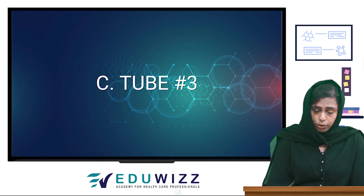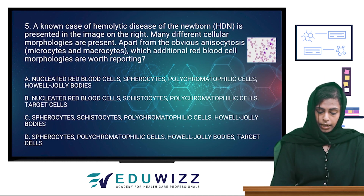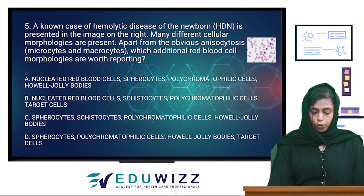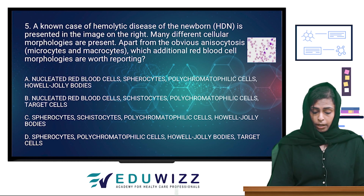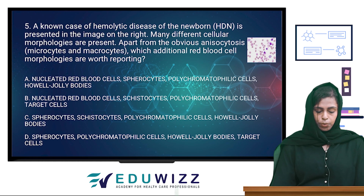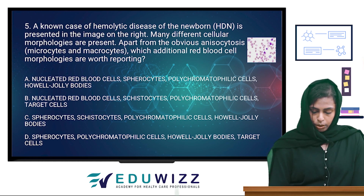The next question: a known case of hemolytic disease of the newborn (HDN) is presented in the image. Many different cellular morphologies are present apart from the obvious anisocytosis — that is, microcytes and macrocytes. Which additional red cell morphologies are worth reporting?